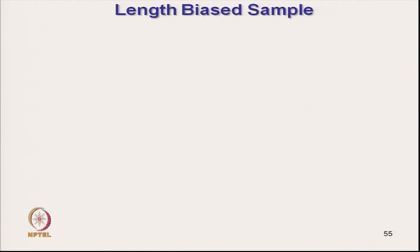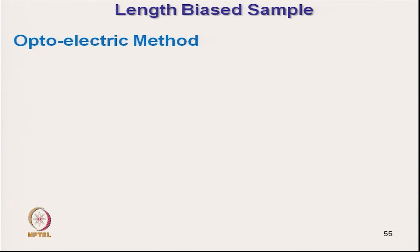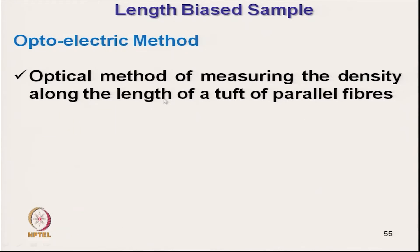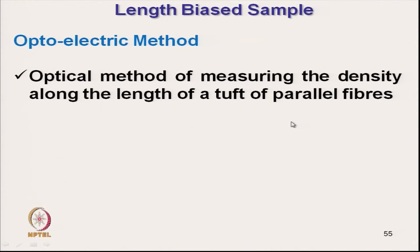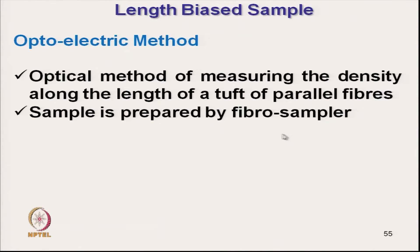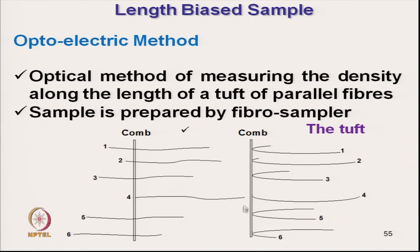In the optoelectronic method, this optical method measures the density along the length of the tuft of parallel fibres. The sample is prepared by the fibrosampler, which is called a tuft. In the optoelectronic method, the density of fibres present is measured optically.